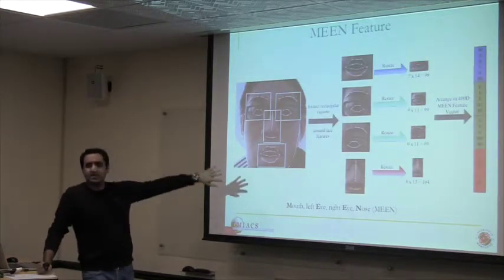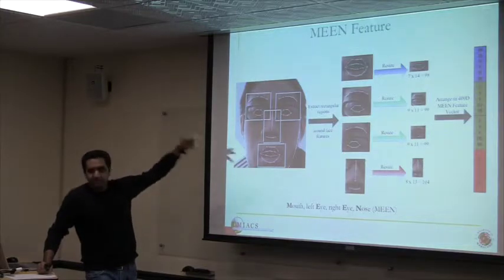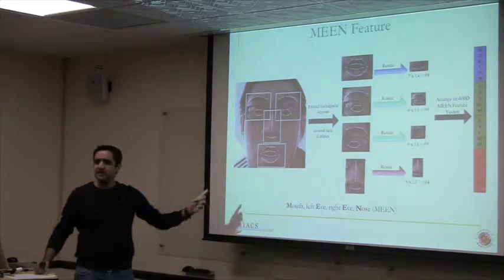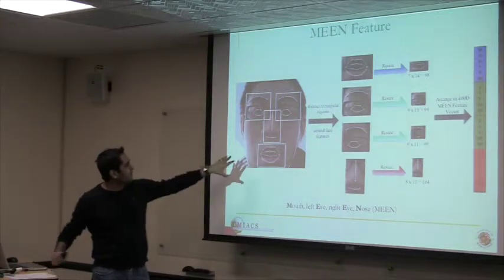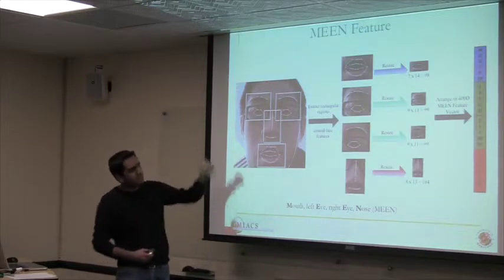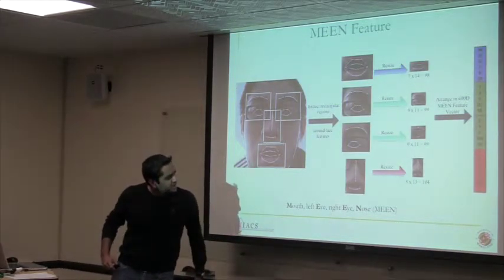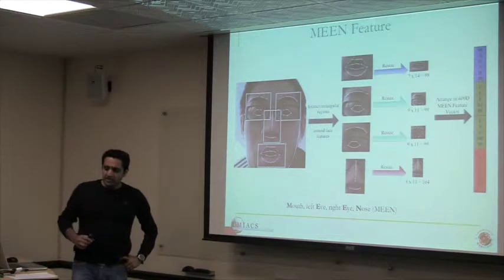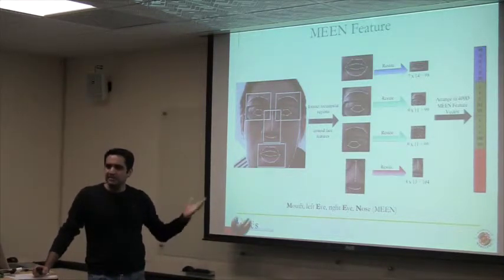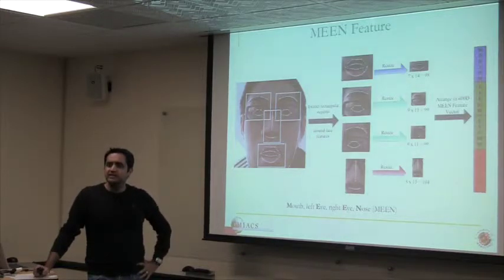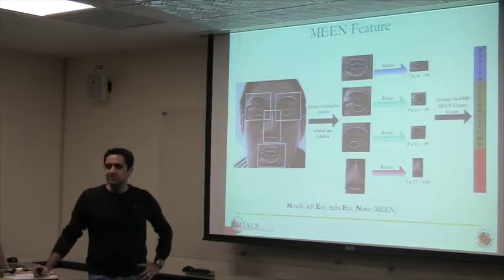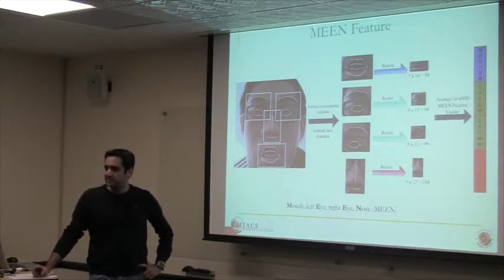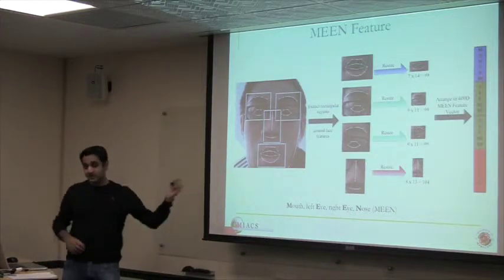Because we know where the landmarks are, we extract the so-called MEAN feature — standing for Mouth, Eye, Eye, and Nose. Knowing the locations of the landmarks, we extract and concatenate these features to come up with a 400-dimensional feature vector. We wanted to study the performance of different classification methods on the collected data. In the computer vision and machine learning community, over the last five or six years, sparse representation-based classification has been shown to produce state-of-the-art results on a variety of image classification and object recognition datasets.